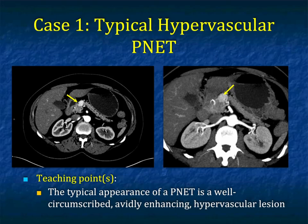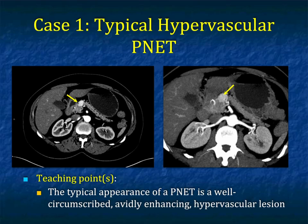I have more than a dozen cases that illustrate what we're looking at. This first case is the most typical hypervascular neuroendocrine tumor — a really nice example. The lesions are well-defined, well-circumscribed, and avidly enhancing and hypervascular. If this weren't a neuroendocrine tumor, I would be thinking about renal cell carcinoma, but the kidneys look fine. This is a very classic neuroendocrine tumor.